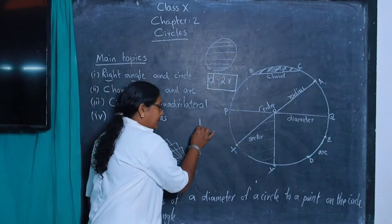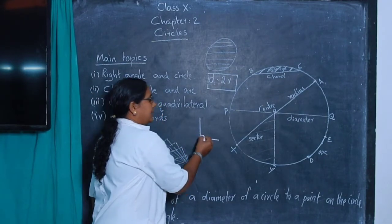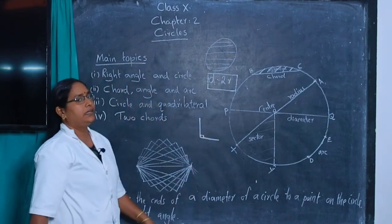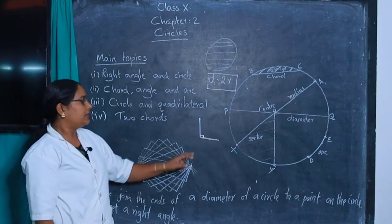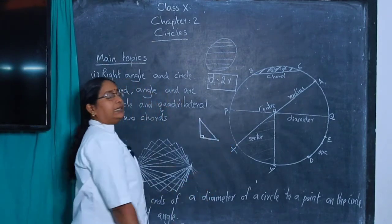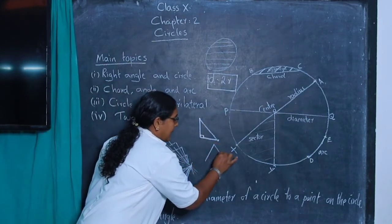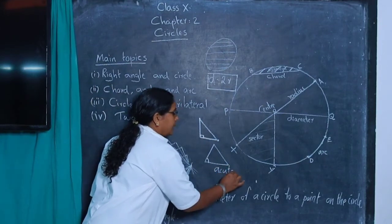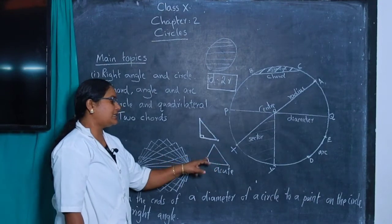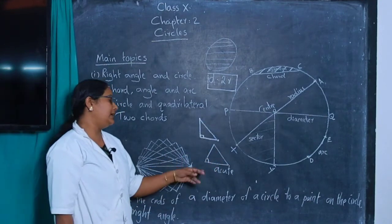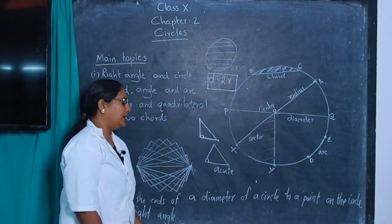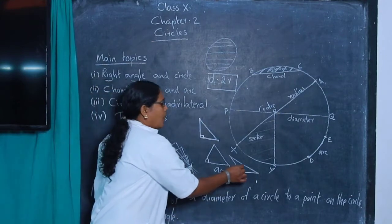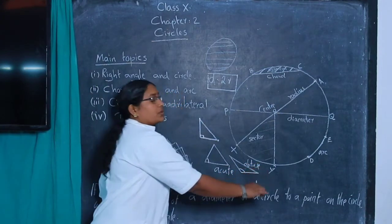The first subtopic is right angle and circle. A right angle means two lines make an angle of 90 degrees, or two lines are perpendicular. This is a right-angled triangle. When all three angles are acute, meaning less than 90 degrees, it is called an acute-angled triangle.